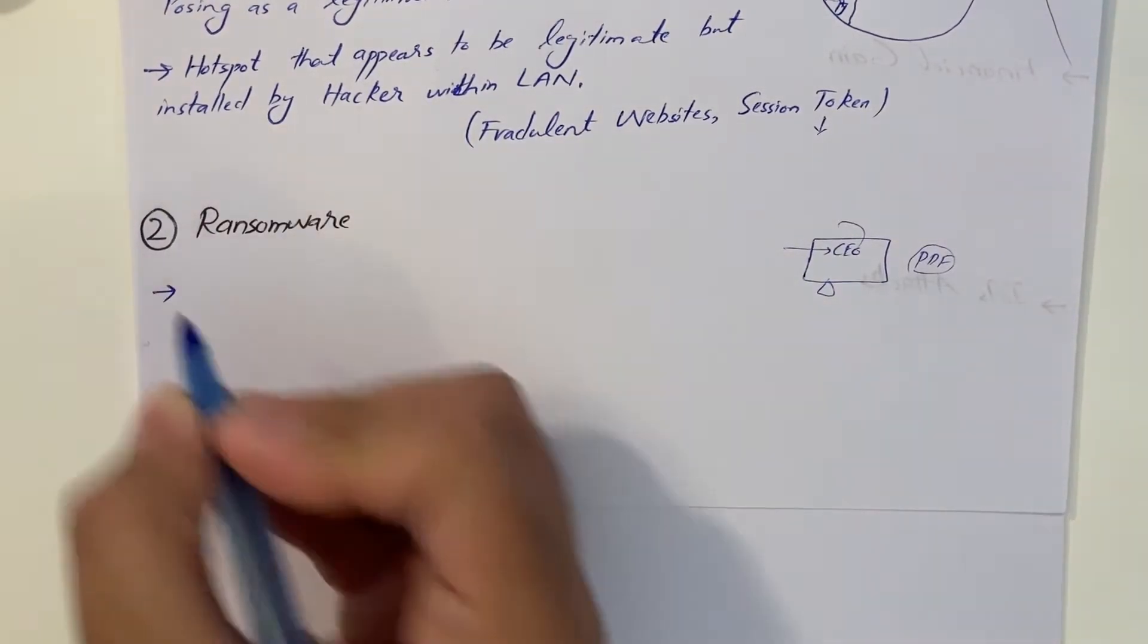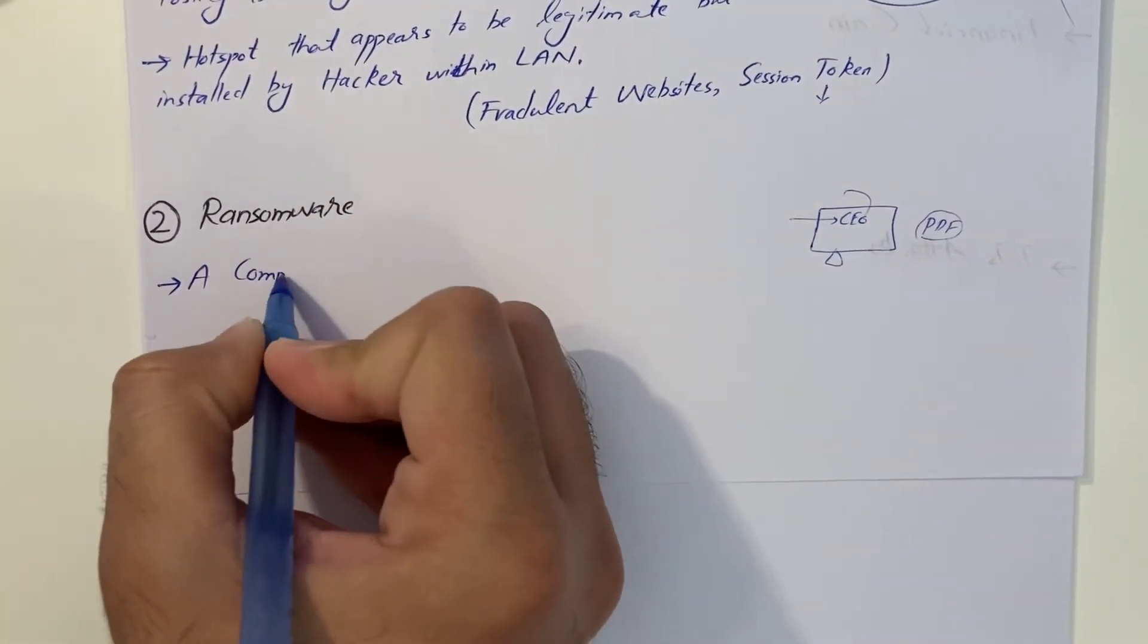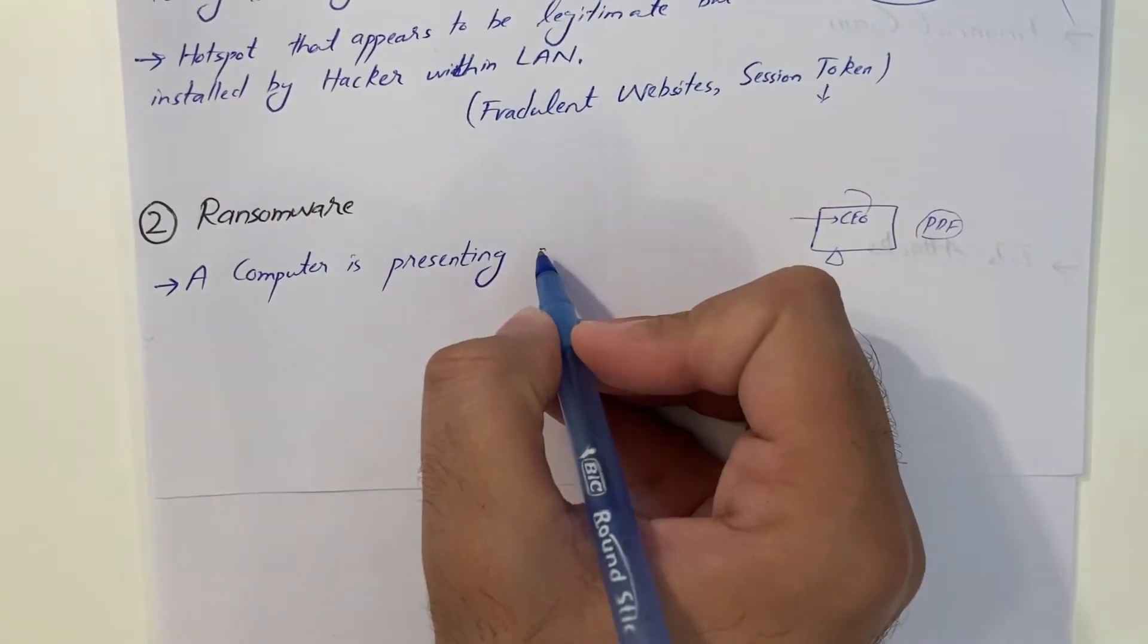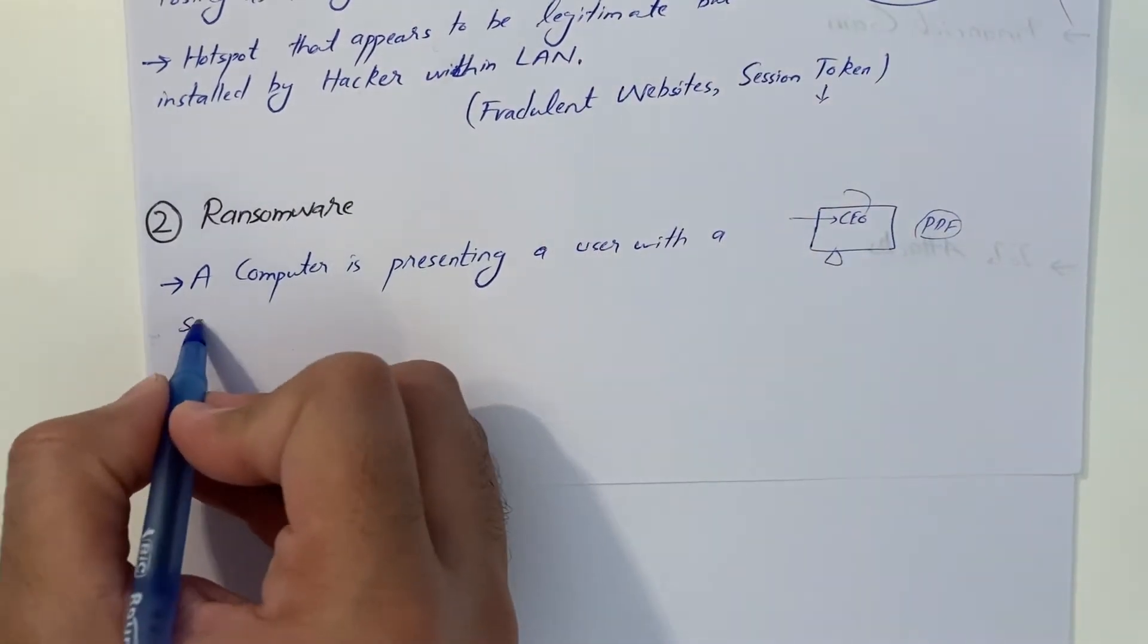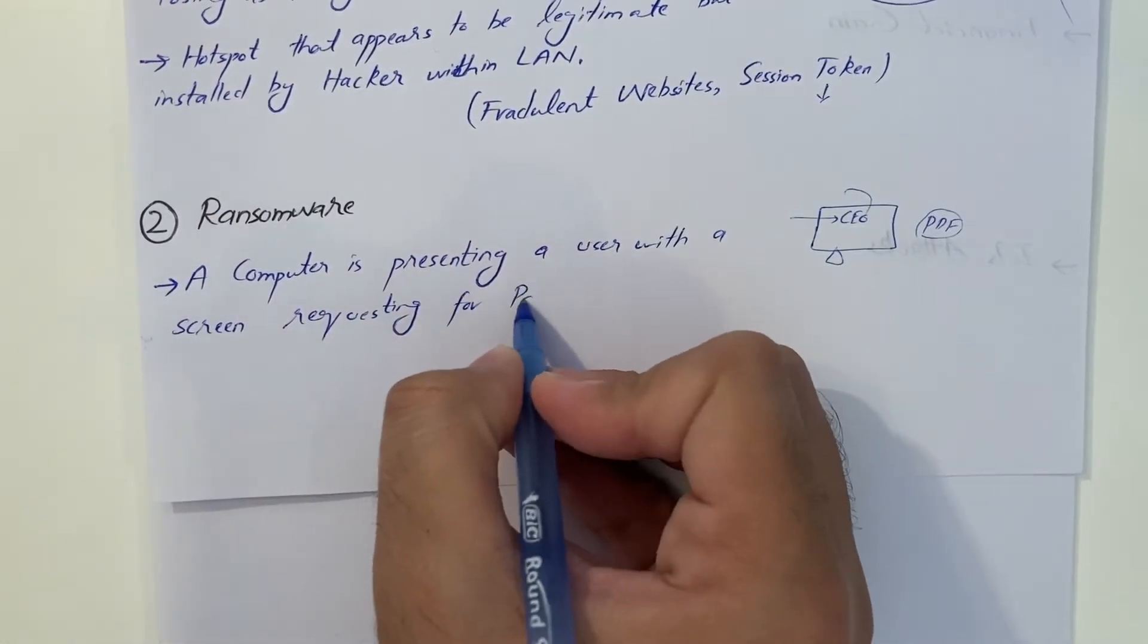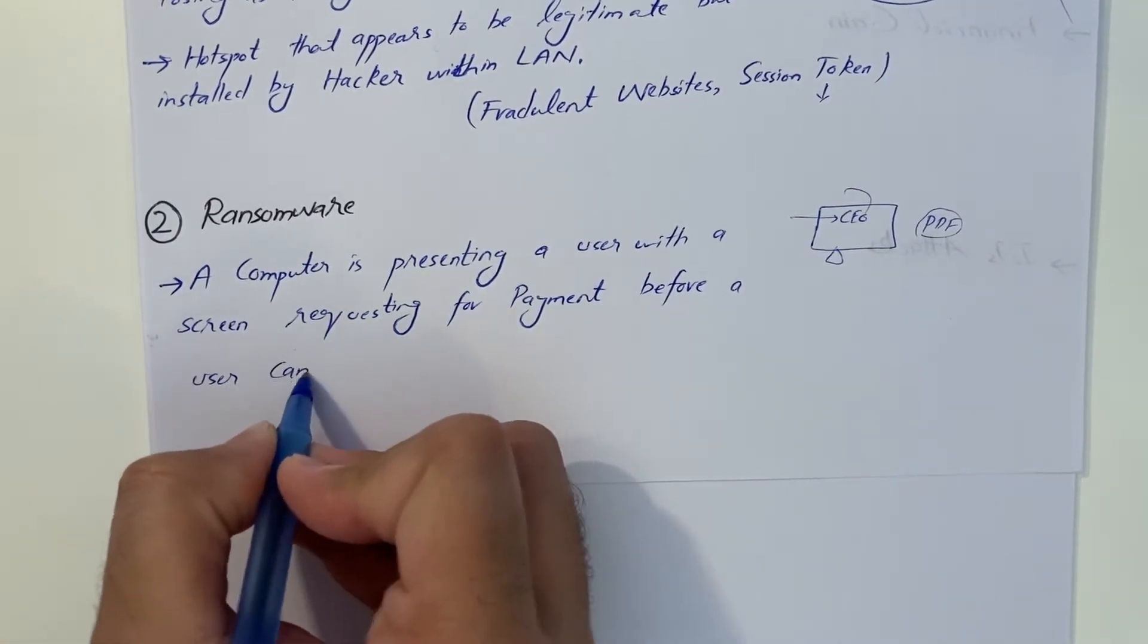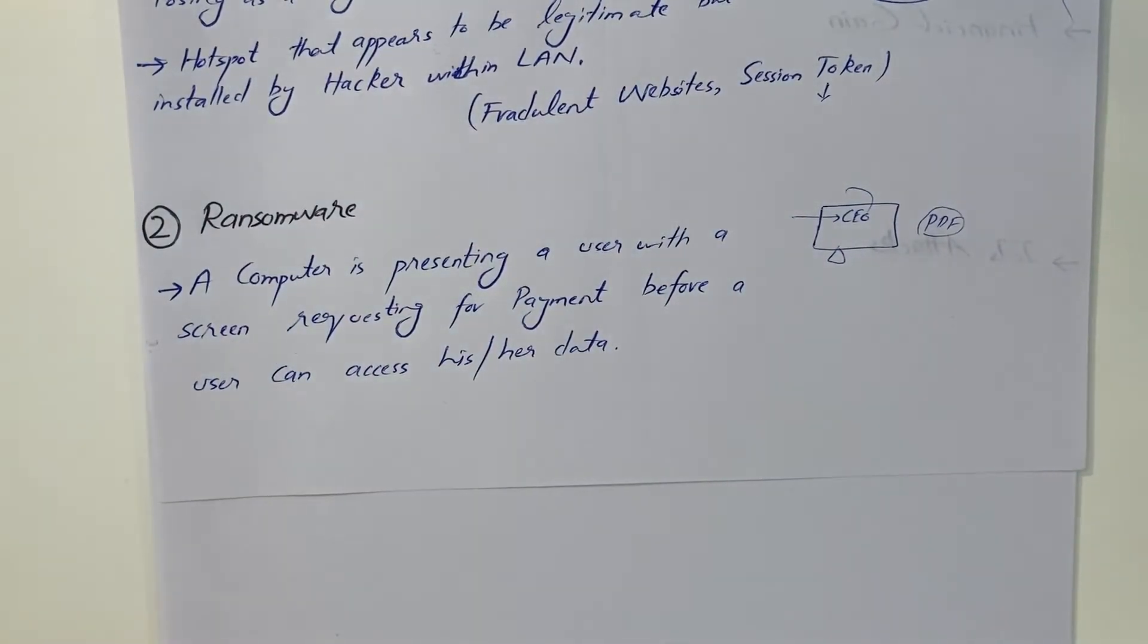Ransomware attack is basically presenting a user with a screen saying the computer is locked and demanding payment. It's your own computer, but it got locked down. Somebody else will actually set a password on your computer. That is called ransomware attack.